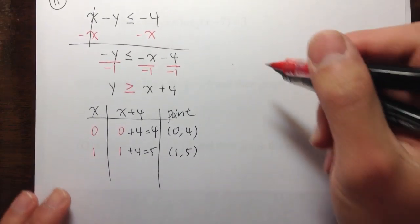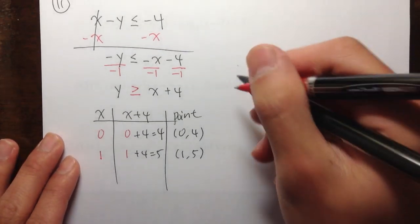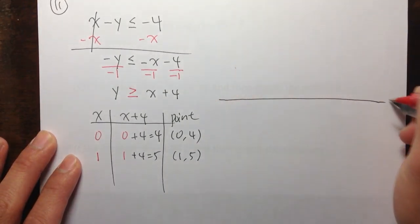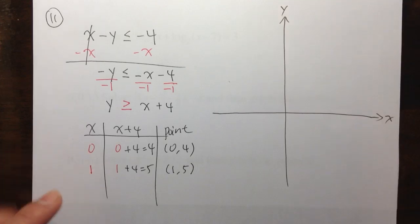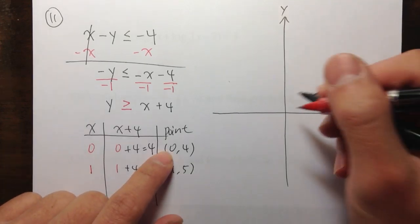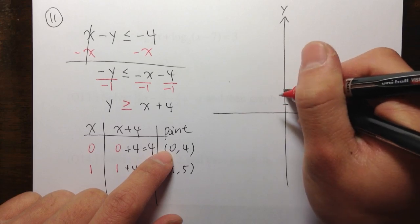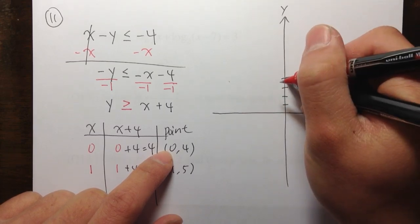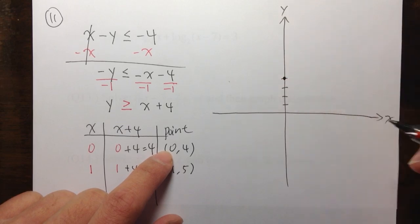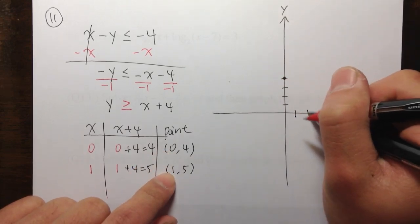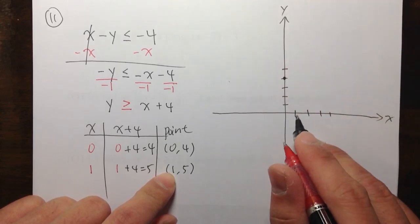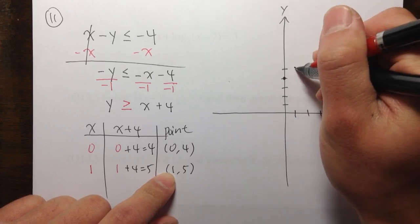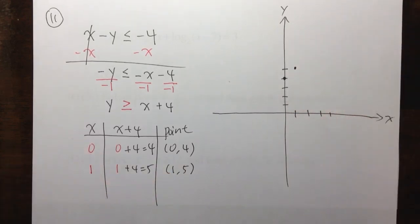I'll put everything right here and make the graph big. I have x and y — let me label the points. I have (0, 4): go up 1, 2, 3, 4 — that's the first point. And then (1, 5): go to the right once and up five times. There are a few more things I have to make a note on.